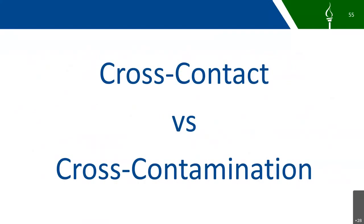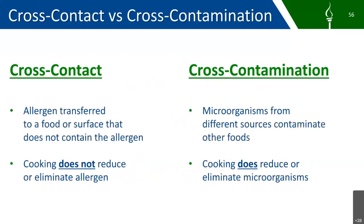Cross-contact versus cross-contamination: Cross-contact is when an allergen is transferred to a food or surface that does not contain the allergen — such as a cutting board or a knife used to prepare the food. Cooking does not reduce or eliminate the allergen. Cross-contamination is when microorganisms from a different source contaminate other foods — microorganisms would be like bacteria from a food that contaminates other foods. Cooking does reduce or eliminate those microorganisms.